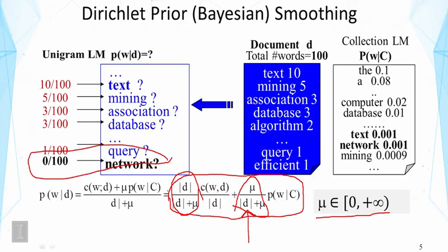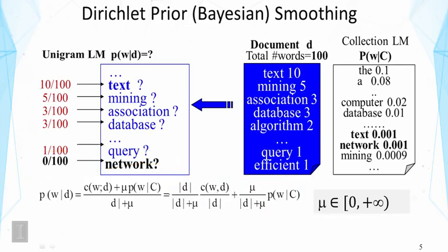There is another way to understand this formula, which is even easier to remember, and that's on this side. It's easy to see we can rewrite the smoothing method in this form. Now in this form, we can easily see what change we have made to the maximum likelihood estimate, which would be this part. So normalize the count by the document length.